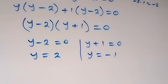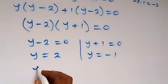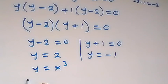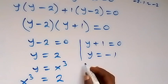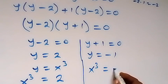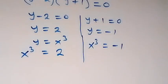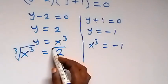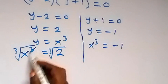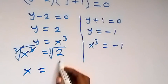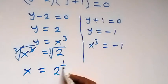Recall that we let y be equal to x raised to power 3. So it implies that x raised to power 3 equals to 2. Also, x raised to power 3 equals to minus 1. On this side, we can take the cube root on both sides. So cube root cancels, and we have x equals to the cube root of 2, same thing as 2 raised to power 1 over 3.